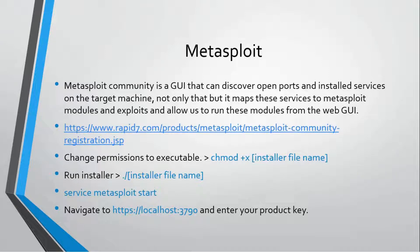In the previous videos, what we were doing is scanning our server or the machine we actually want to hack using Zenmap, then finding the open ports and the services running on those ports, and then looking for any exploits or payloads available in the public market against those services. If those services had any vulnerabilities, we were looking for them on Google by searching and reading about them.